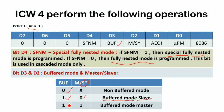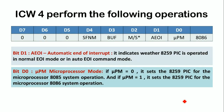If D3 equals 1 and D2 equals 1, this represents buffered mode for master. Bit D1 decides whether automatic end of interrupt is active: if D1 equals 1, there is automatic end of interrupt; otherwise, normal EOI mode. Bit D0 indicates whether the processor is 8085 or 8086: if D0 equals 0, it is 8085 system operation; if D0 equals 1, it is 8086 system operation.